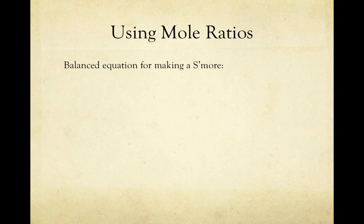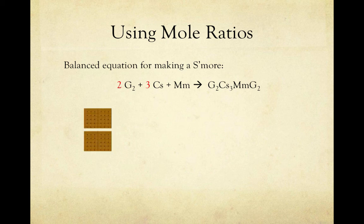Now let's take a recipe and make it look like a balanced equation. Here I've written a balanced equation for making a s'more. I've obviously made this up. But here, I'm telling you that you need two G2s, so two graham crackers, and of course they're G2s, because everybody knows that graham crackers are diatomic, there's two per square.